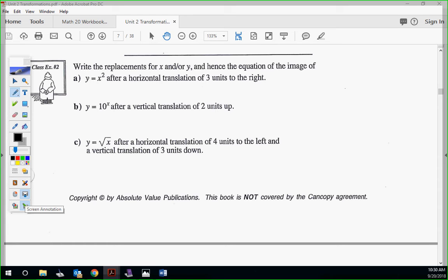Here we go. Write the replacements for x and y, and hence the equation of the image. So go ahead and try this with your partner. It tells you what you're going to do to it, and then rewrite the equation. Same thing with all these. So try that real quick. I'll pause the video. All right. So what do we get for A, guys? Y equals open bracket, x minus 3, close bracket square. Good.